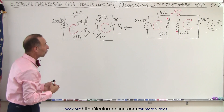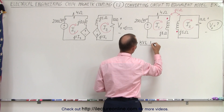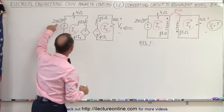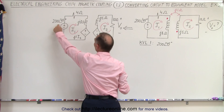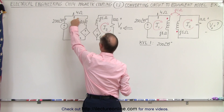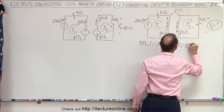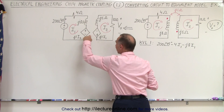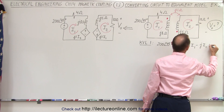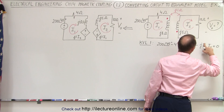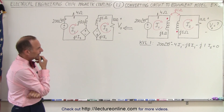Now we're ready to draw the Kirchhoff voltage loops for loop one and loop two. For KVL loop one, starting here we have a 200 volt gain at a 45 degree phase angle — 200 at 45 degrees — and that's the difference we have to carry this phase angle with us. We have a voltage drop of minus 4·I1, a voltage drop across the inductor of minus J8·I1, and then a voltage drop from plus to minus on the induced voltage of minus J1·I2, and that all adds up to zero.